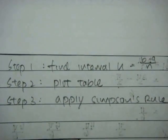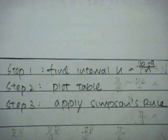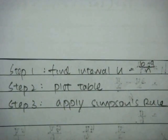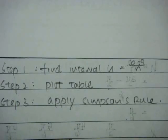Recalling the steps earlier: Step 1, we find interval h which equals b minus a over n. Step 2, we plot the table. Step 3, we will apply the Simpson's rule.